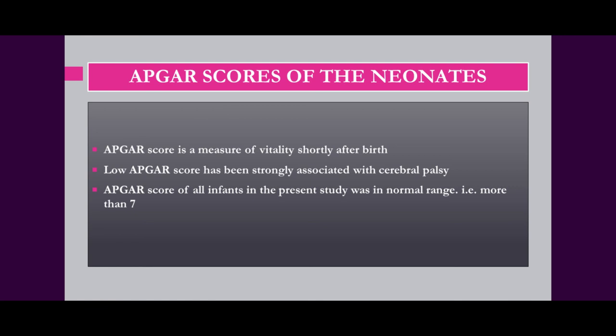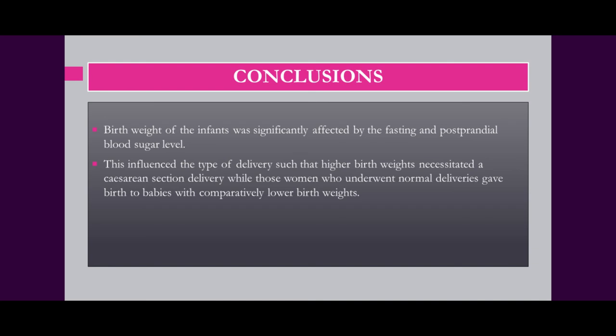When APGAR scores were noted for these infants — APGAR score being a measure of vitality shortly after birth, with a low APGAR score strongly associated with cerebral palsy — almost all infants born in this study had a normal APGAR score of more than 7. We concluded that birth weight of infants was significantly affected by fasting and postprandial blood glucose levels; higher mean fasting and postprandial blood glucose levels were very significantly associated with caesarean delivery and birth of a macrosomic child. Higher birth weights necessitated caesarean section, while women who underwent normal deliveries gave birth to babies with comparatively lower birth weights, indicating a healthier prognosis for those children.